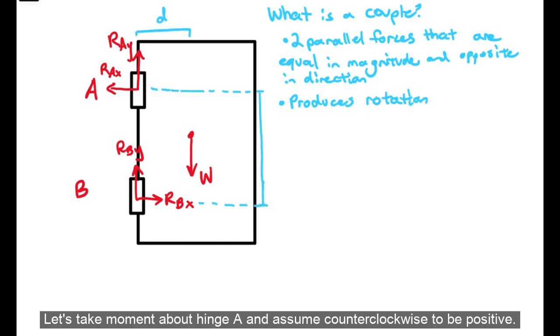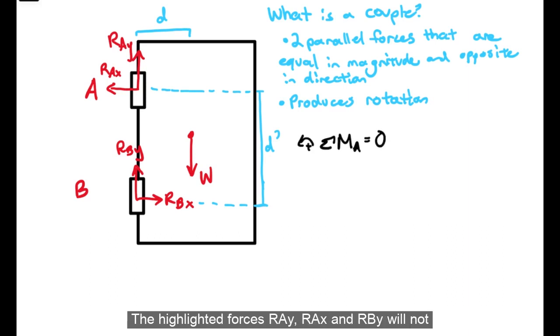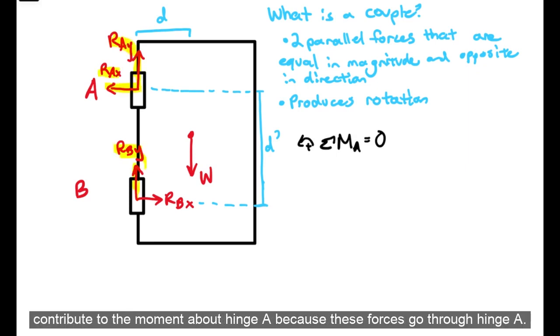Let's take moment about hinge A and assume counterclockwise to be positive. The highlighted forces, RAy, RAx, and RBy will not contribute to the moment about hinge A because these forces go through hinge A.